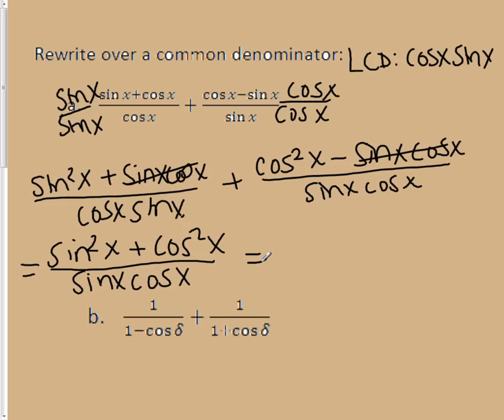And we know the numerator happens to be a Pythagorean identity, this equals one. So it's going to be one over the sine x, cosine x. And I can write this as one over the sine x times one over the cosine x, which we know becomes the cosecant of x, the secant of x.